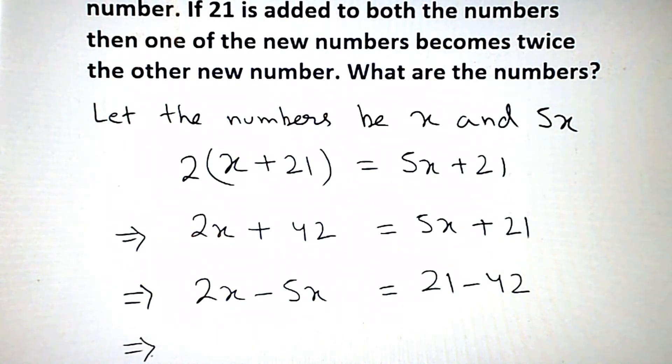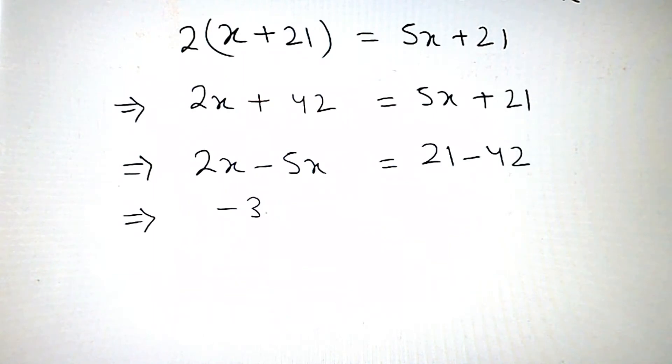Now when we subtract here, it becomes minus 3x is equal to minus 21. The negatives cancel, x value becomes 21 by 3.